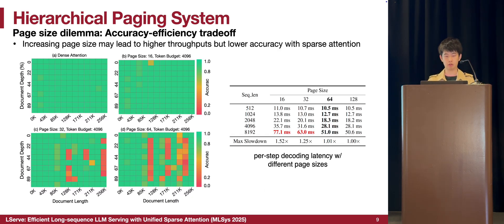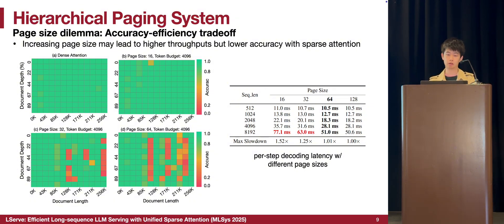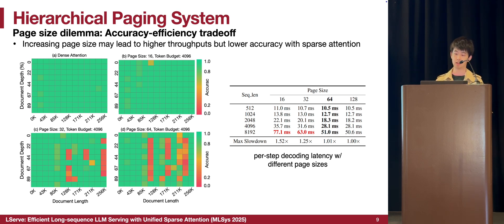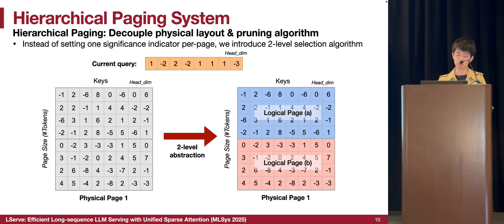However, this kind of design may lead to a challenge we call the page size dilemma in our paper. Page pruning algorithms typically prefer smaller page sizes because finer granularity of pruning may lead to better accuracy. On the other hand, larger KV page sizes are typically better from the efficiency side, because hardware efficiency improves due to better continuity of the physical layout of the KV cache manager. To solve this problem, we introduce a hierarchical paging system in LSER, whose key idea is a two-level abstraction of the KV page to decouple the pruning algorithm from the physical memory layout of the KV cache.